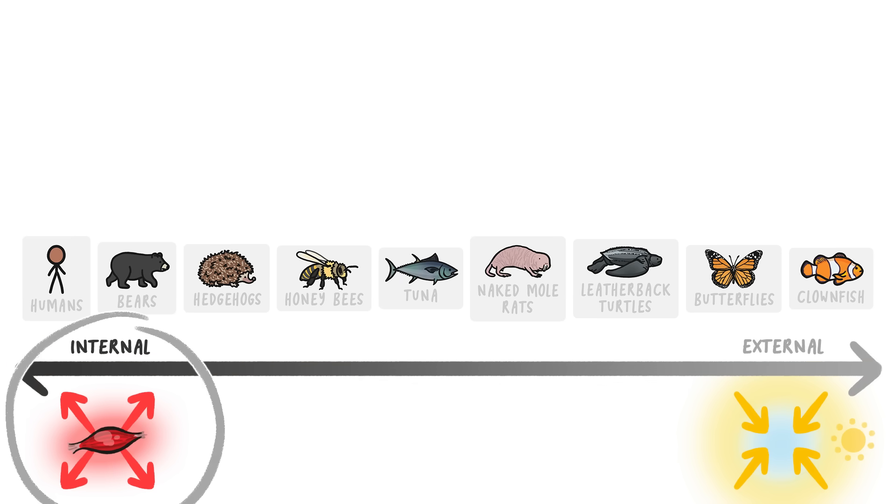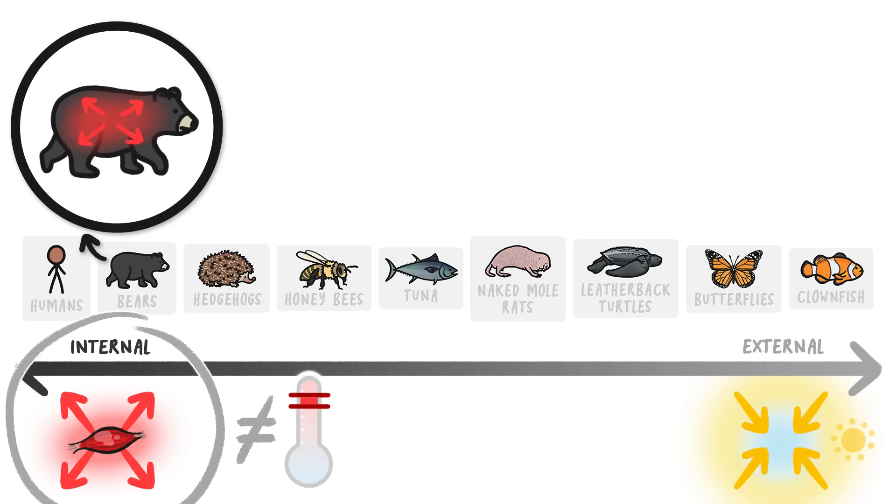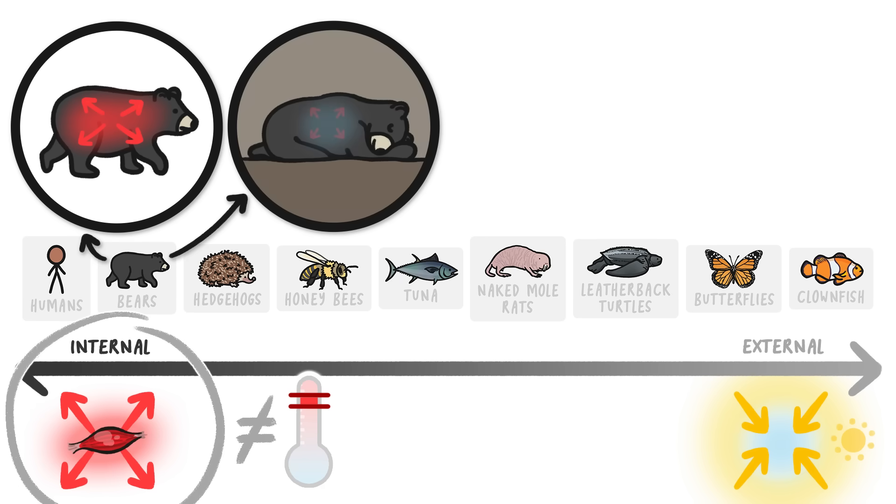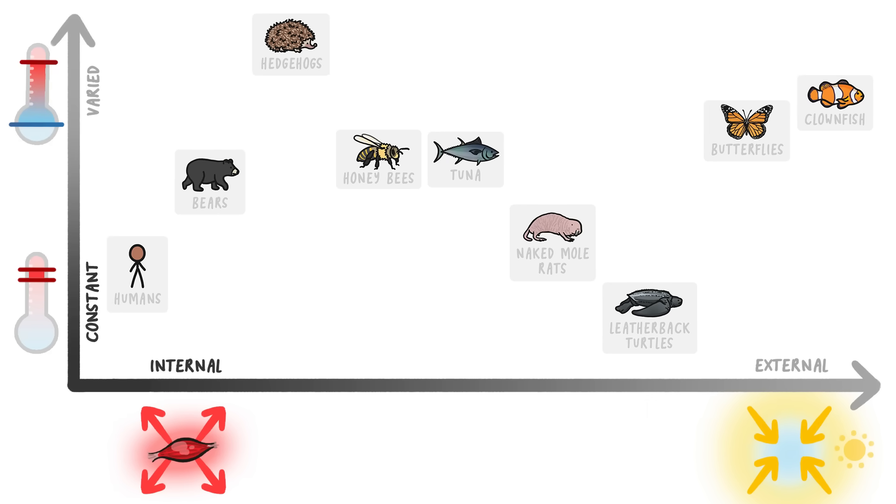But wait, the ostensible purpose of being warm-blooded, that you'd keep your internal body temperature consistent, doesn't hold true either. Even though a bear generates its own body heat, when it hunkers down for the winter, its body temperature drops. So we need to add another dimension to really represent all the different temperature regulation strategies out there. And immediately you can see things get even more complicated.